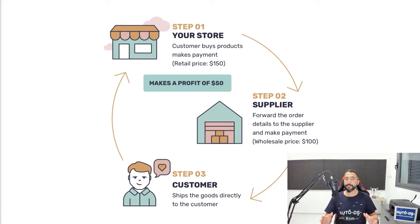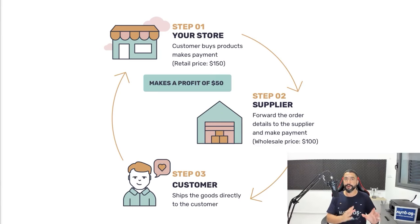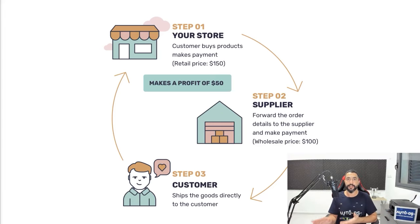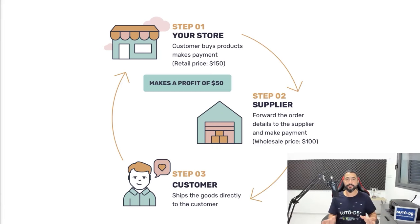For those who don't know, dropshipping means that you're selling products without actually holding their inventory. Your supplier — the one you're sourcing from — is the one with the inventory. And every time you get an order on your store, you're simply buying the product from your supplier and shipping it straight to the customer. Therefore, you're not paying for the inventory — it's all on the supplier. All you have to do is put the product on your store and market it to your customers.